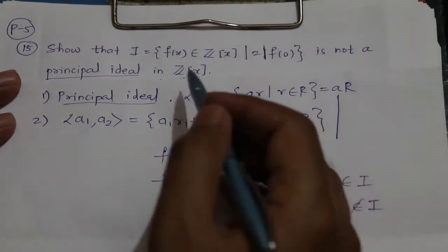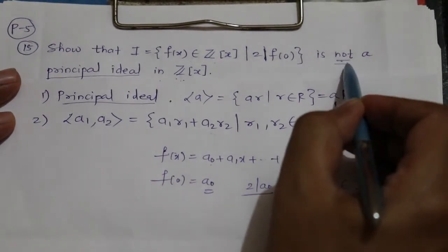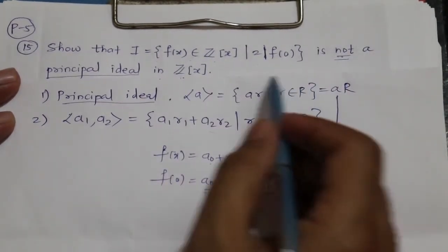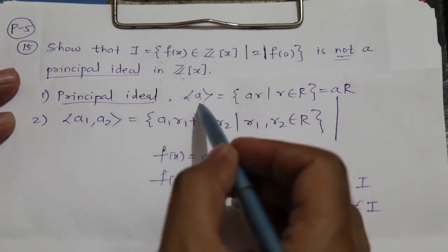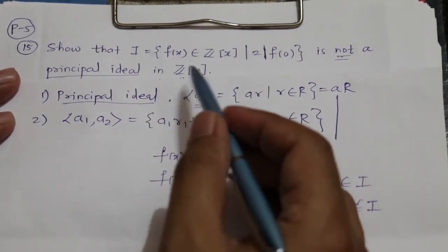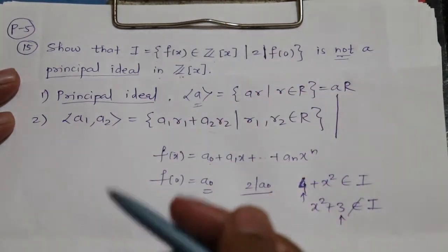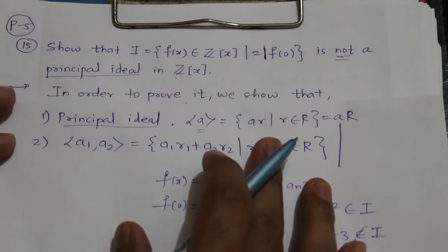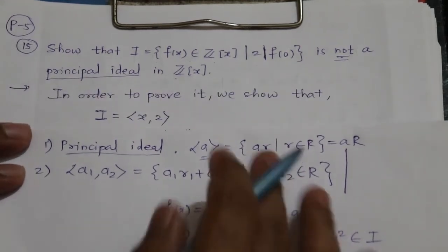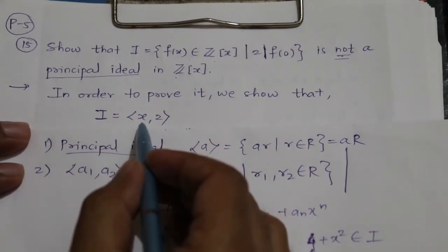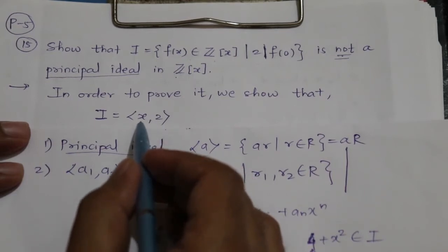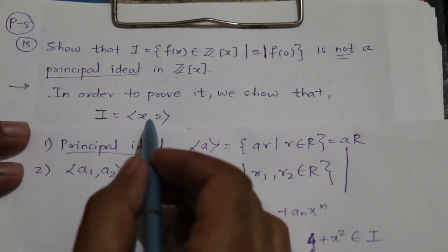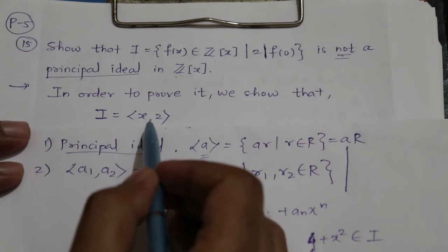To prove that I is not a principal ideal, we need to show that I is not generated by one element. We will show that I is generated by two elements: x and 2. Here x is a polynomial in ℤ[x] and 2 is a constant polynomial in ℤ[x].